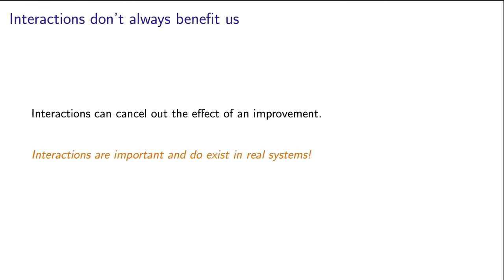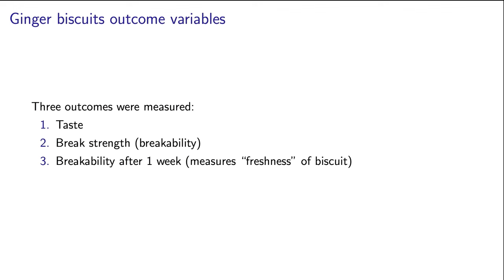There are examples of interactions that actually work against each other and cancel each other out. Today's class is going to consider interaction using a baking experiment. We're going to look at ginger biscuits. Ginger biscuits are quite possibly my favorite type of biscuit. And the results we're going to consider are from a student that I had in my class a few years ago, where she considered three outcome variables. The first variable was taste. The second outcome was break strength or breakability of the biscuit. And the third outcome was the breakability of the biscuit after one week.